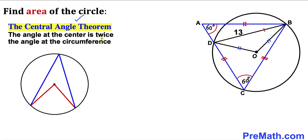Now let's recall the central angle theorem: the angle at the center is twice the angle at the circumference. The angle at the circumference is angle C (60°), and the angle at the center is at O. So if the circumference angle is x, then the center angle is 2x.